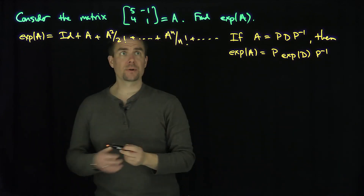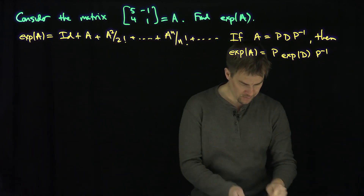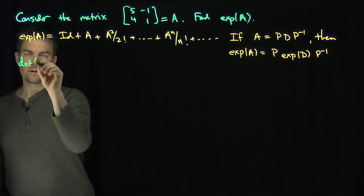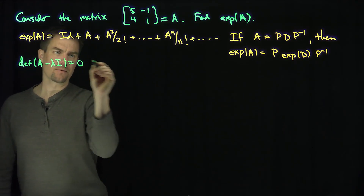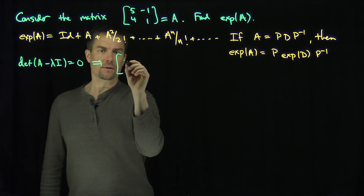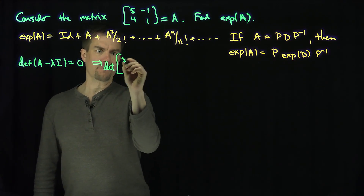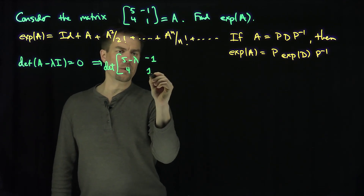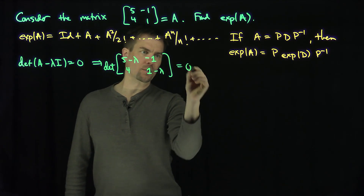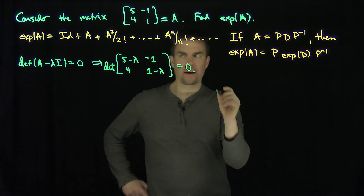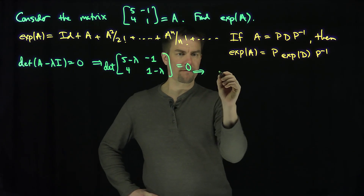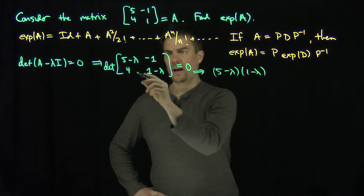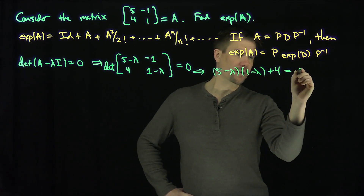However, let's check what the eigenvalues of this matrix are. We're going to solve the determinant of A minus lambda times the identity equals zero. That's the same as the determinant of [[5-λ, -1], [4, 1-λ]] equal to zero. So we have (5-λ)(1-λ) plus 4 equals zero.